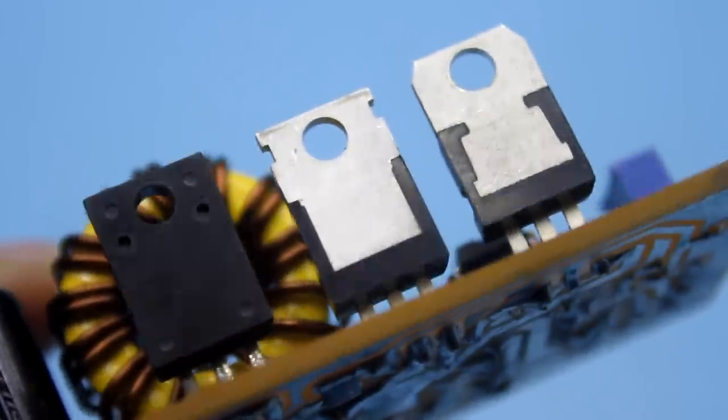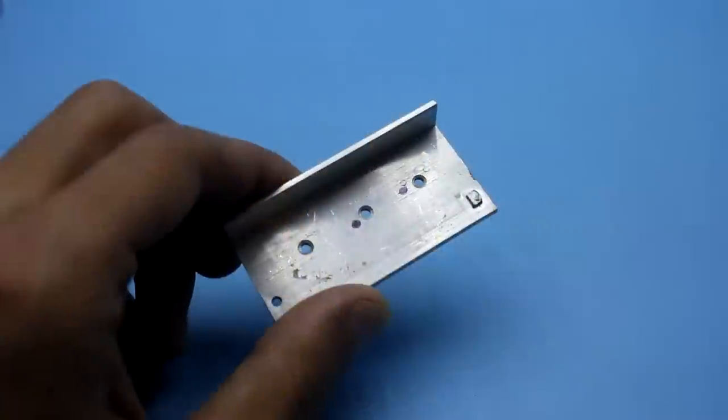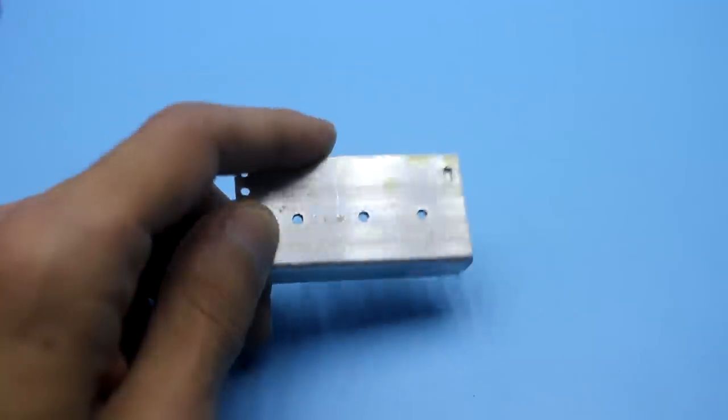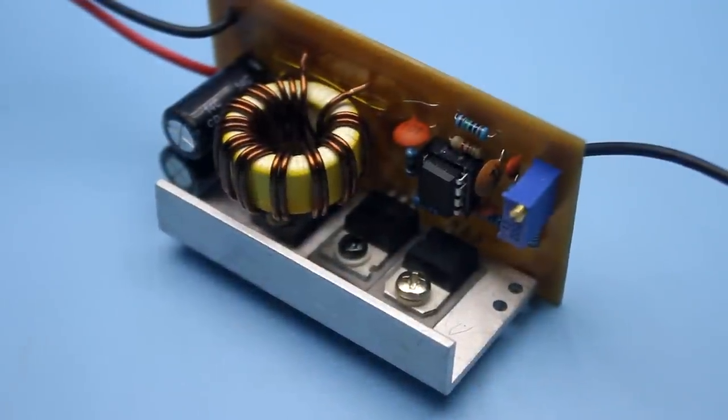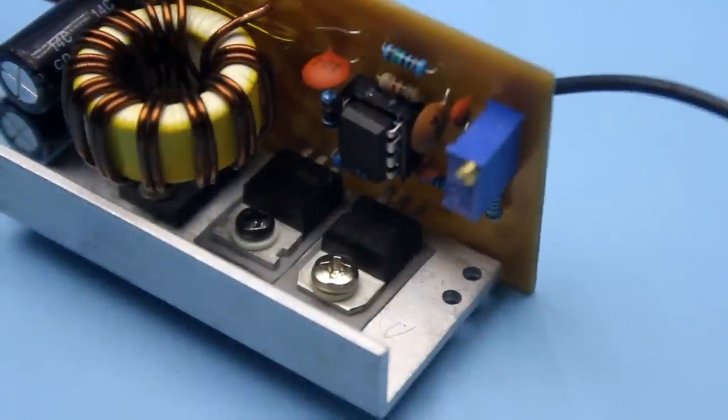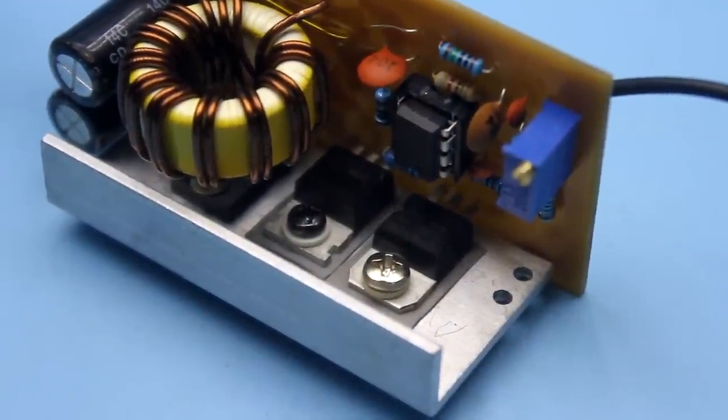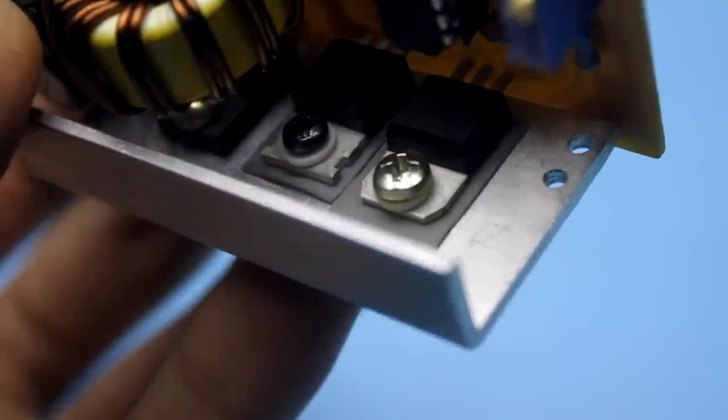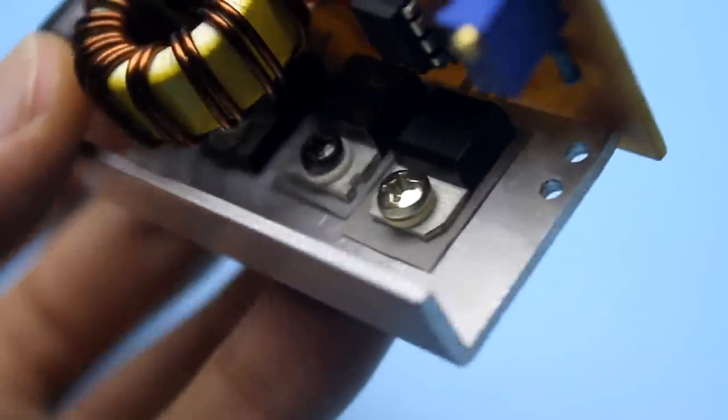Power elements, transistor and rectifier are attached to the aluminum plate. Don't forget to isolate these elements from the radiator using plastic bushings and heat-conducting insulating pads. Thermal paste is also desirable.